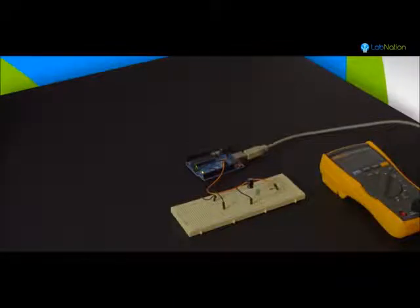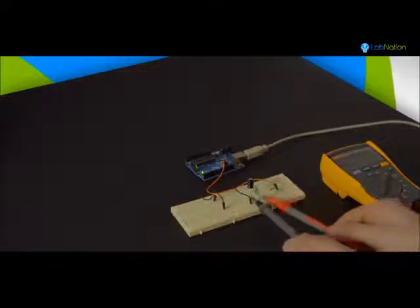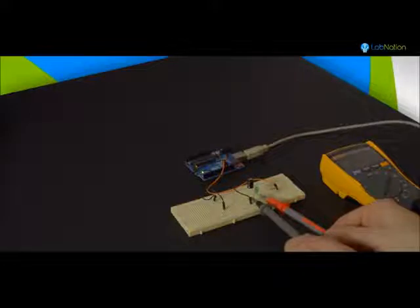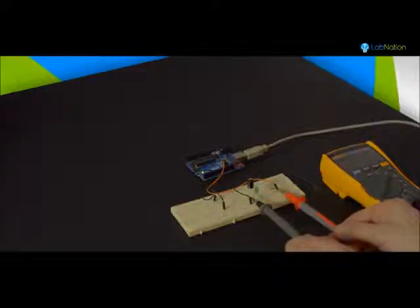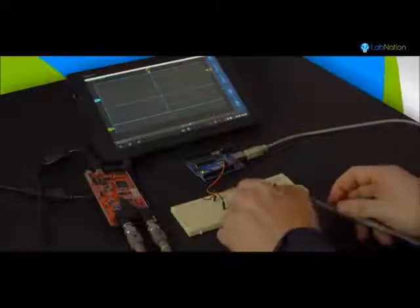Imagine a simple circuit where you want to pulse an LED from the Arduino. In case the LED doesn't light up, what do you do? A simple multimeter doesn't bring you a step further as it measures the same voltage across the LED and across the resistor. Now let's bring in the smart scope and have a look at the same pins.